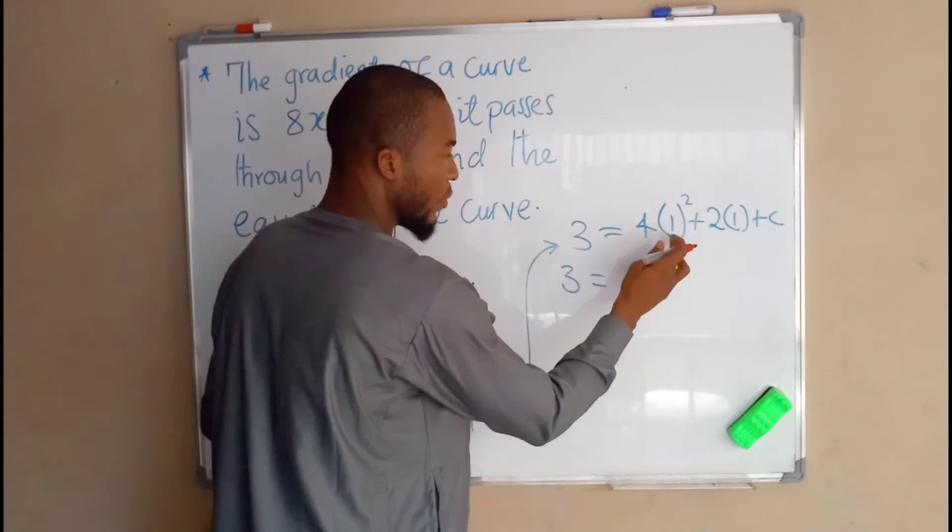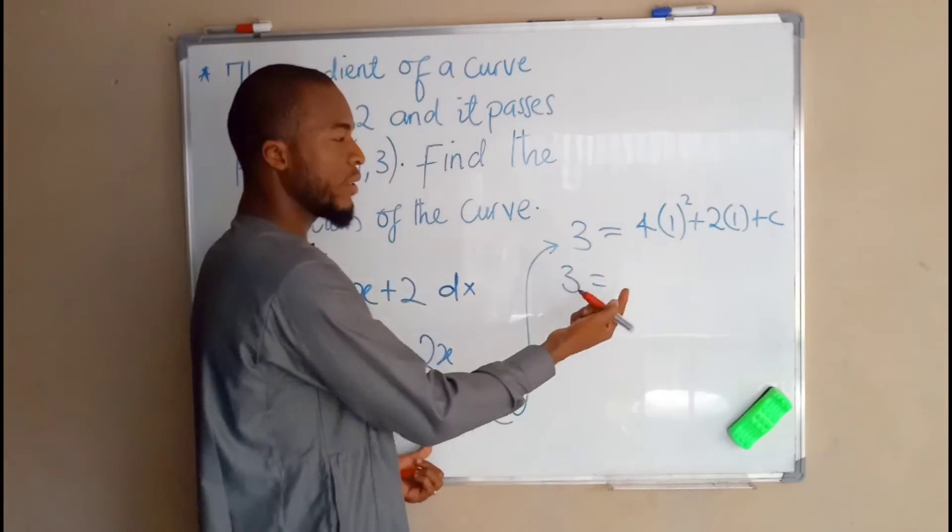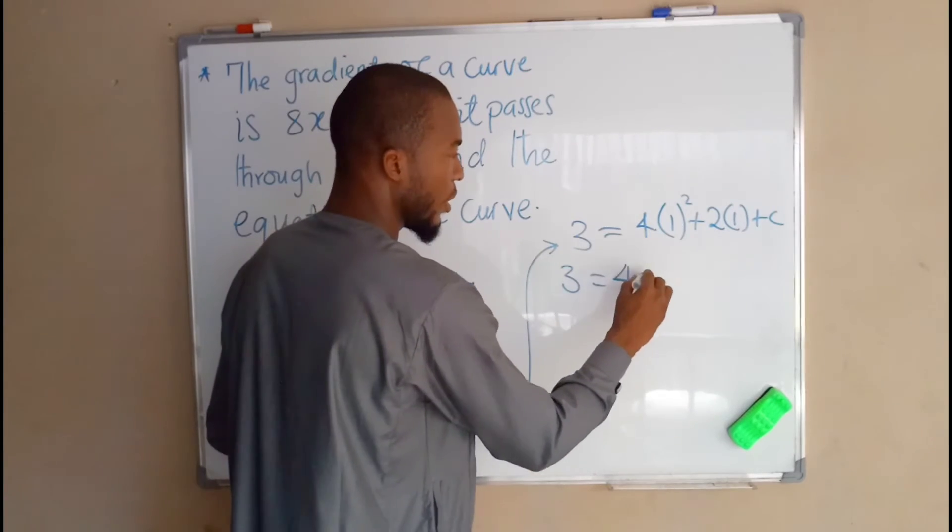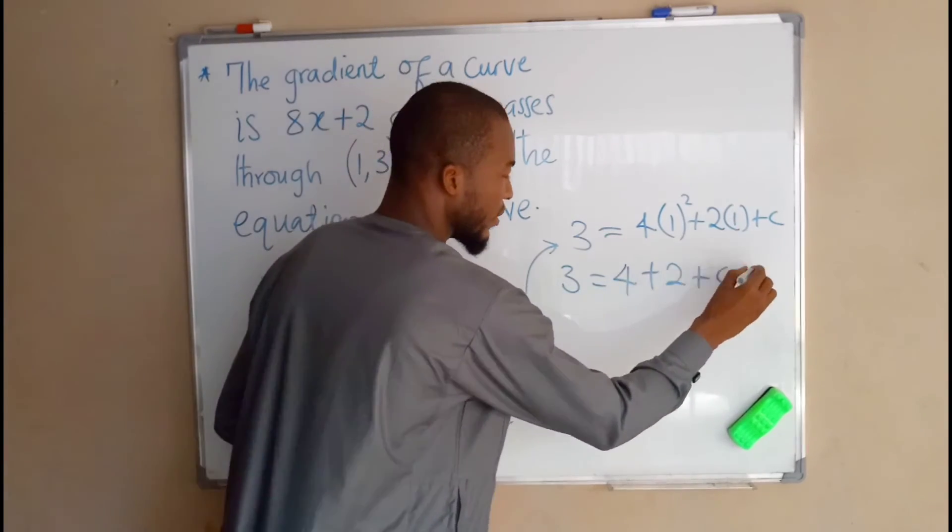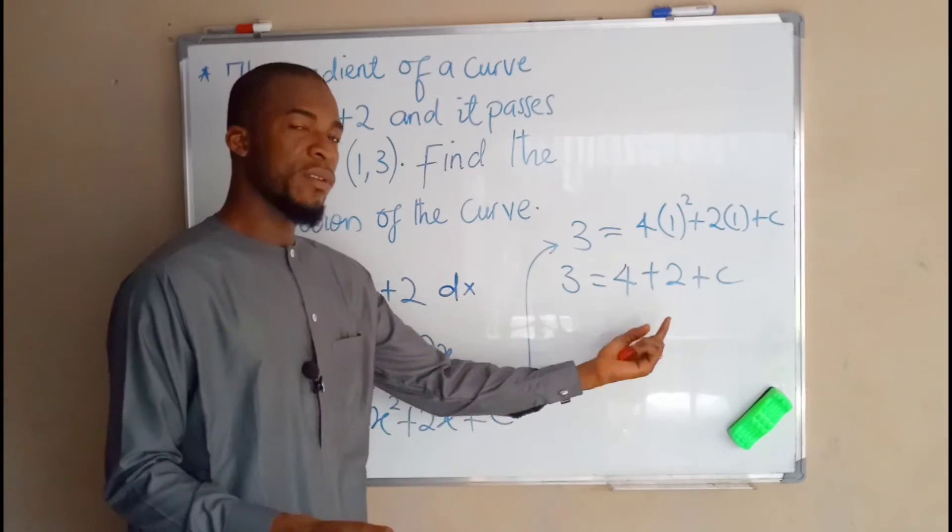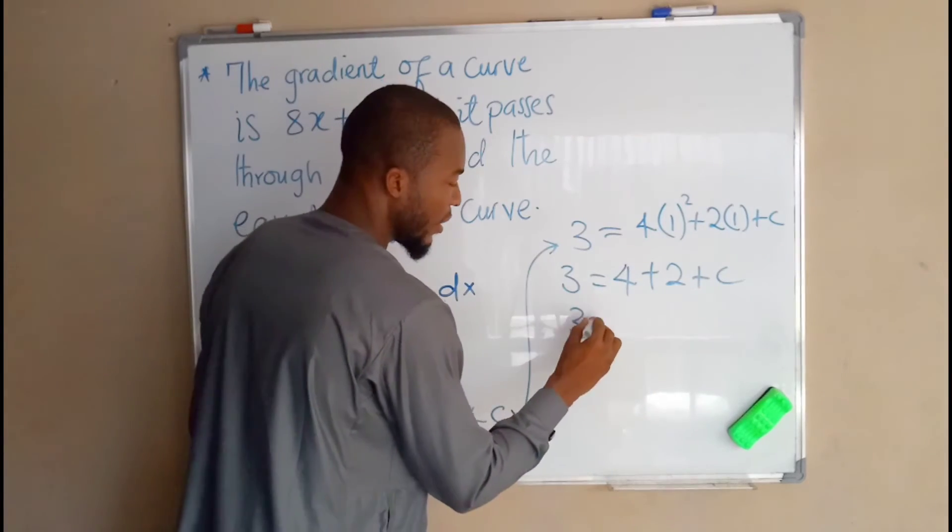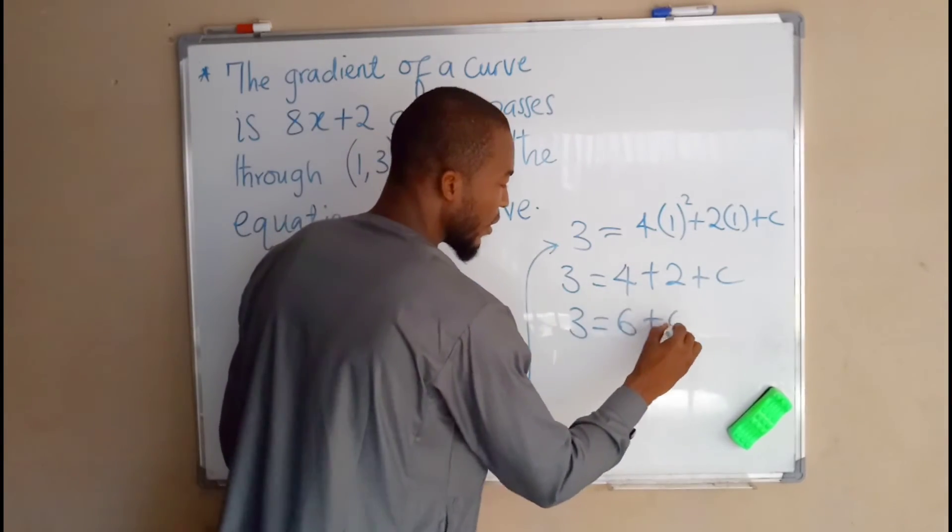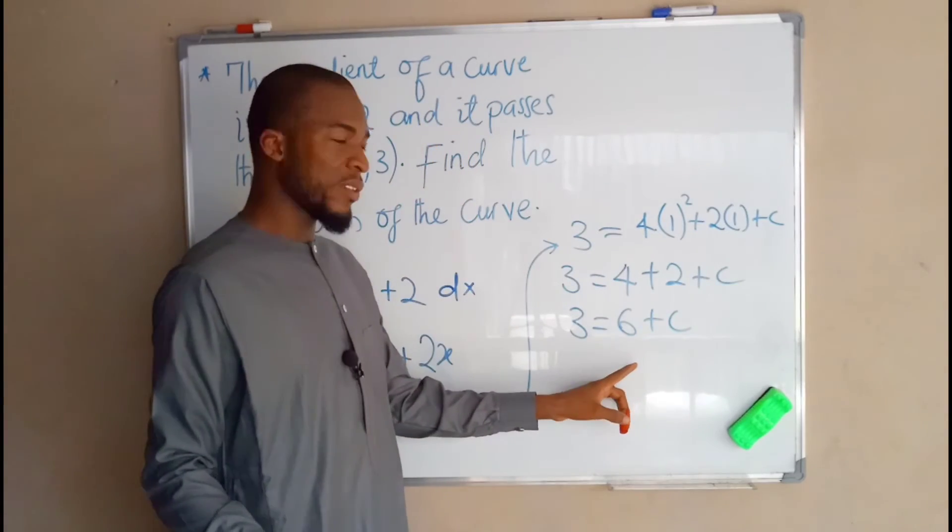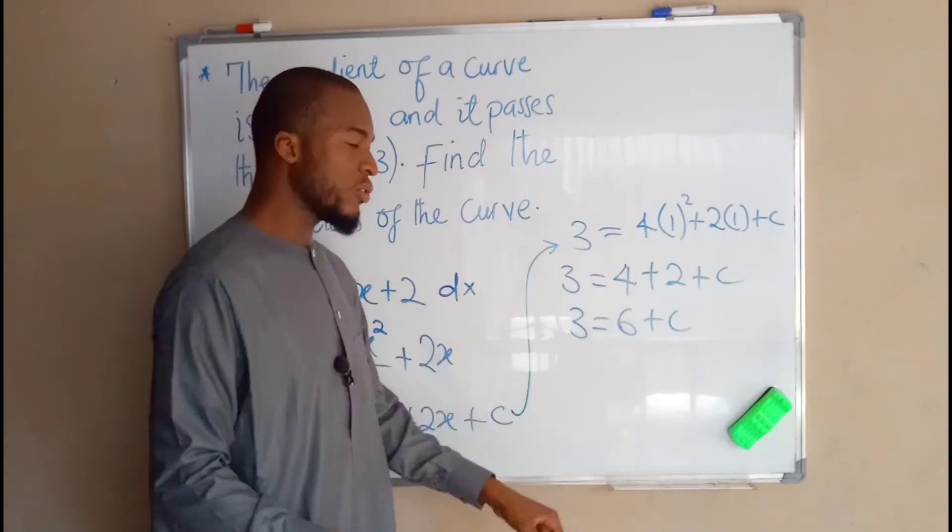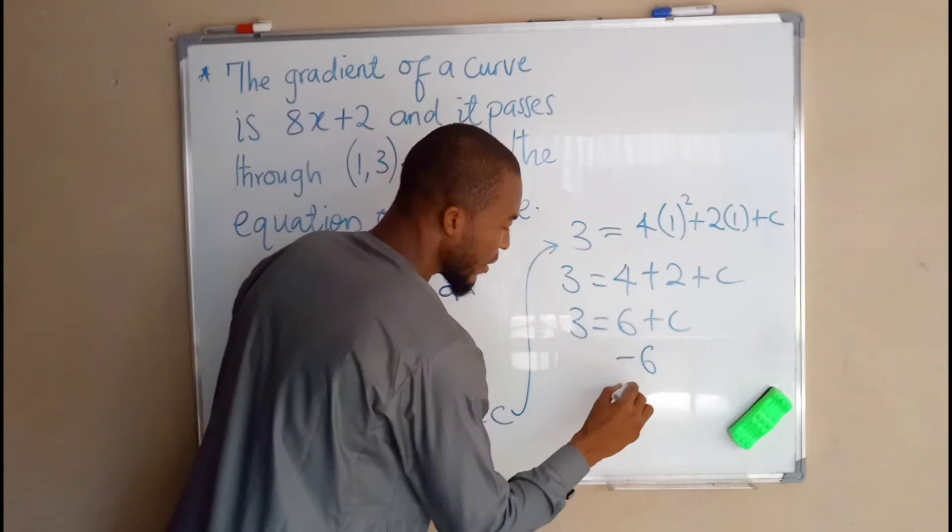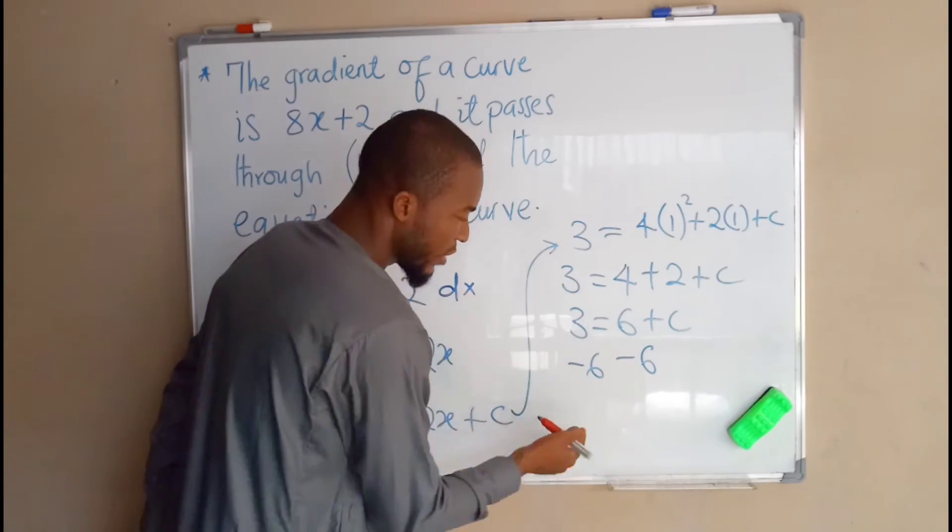3 equals 1 squared is 1, times 4 is 4, plus 2 times 1 is 2, plus the constant. This plus this is equal to 6. So we have 3 equals to 6 plus c. We are going to subtract 6 from both sides so that we have only c to the right hand side.